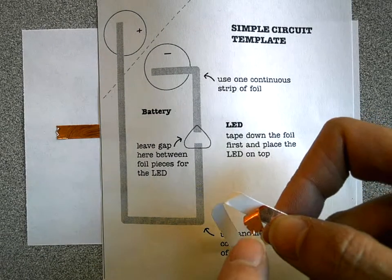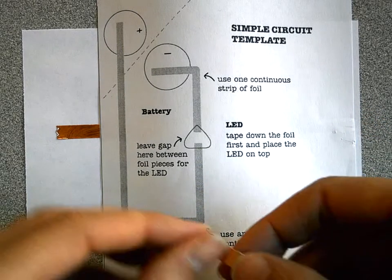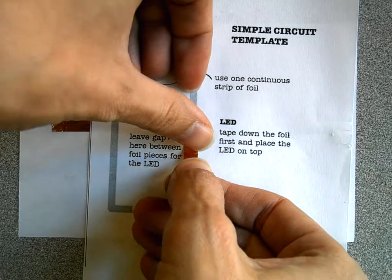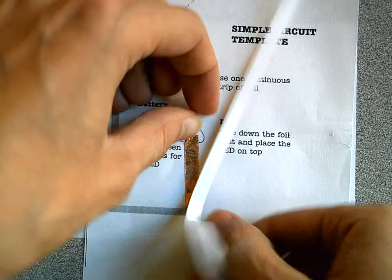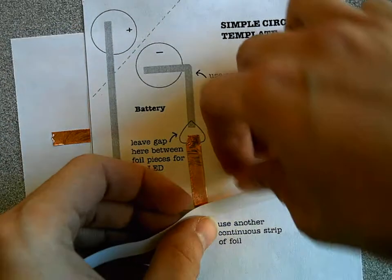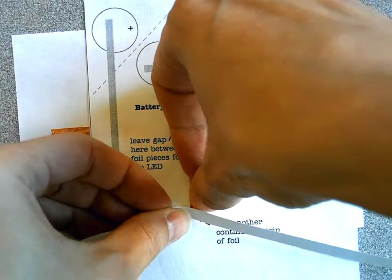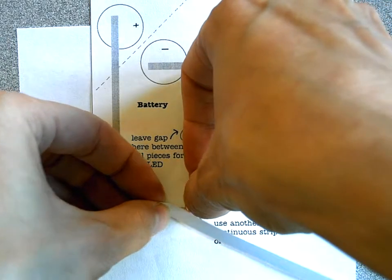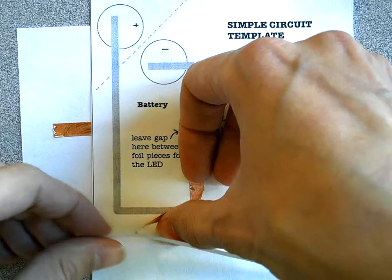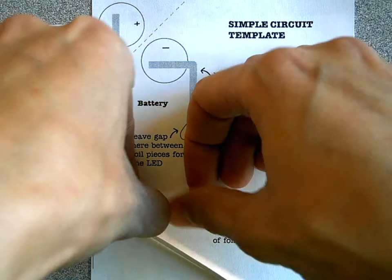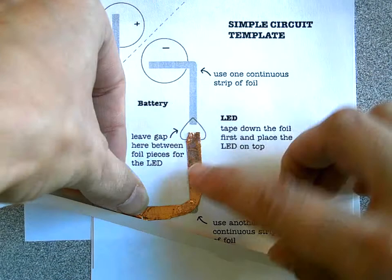Instead, peel back a bit and start it. When you get close to the corner, you want to start turning the foil and just squish it down with your finger until it is back on the next straight path. It doesn't matter too much if it looks like garbage.